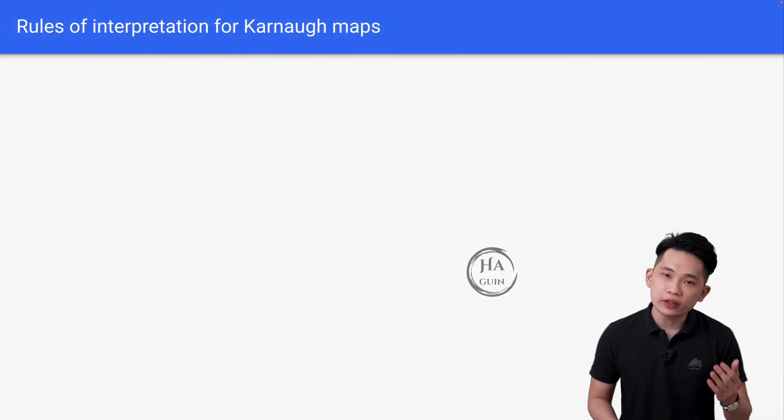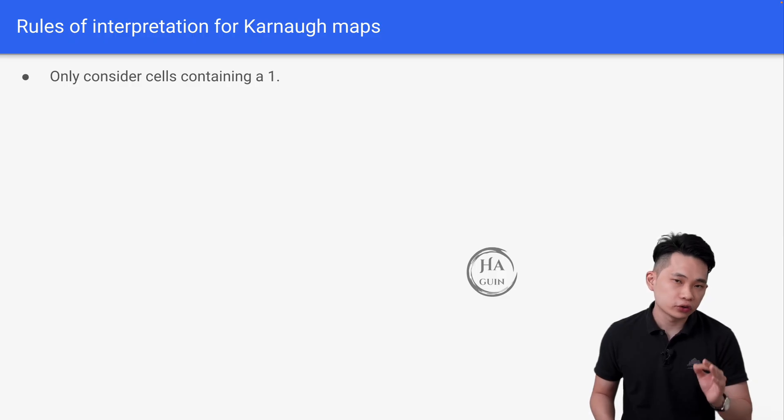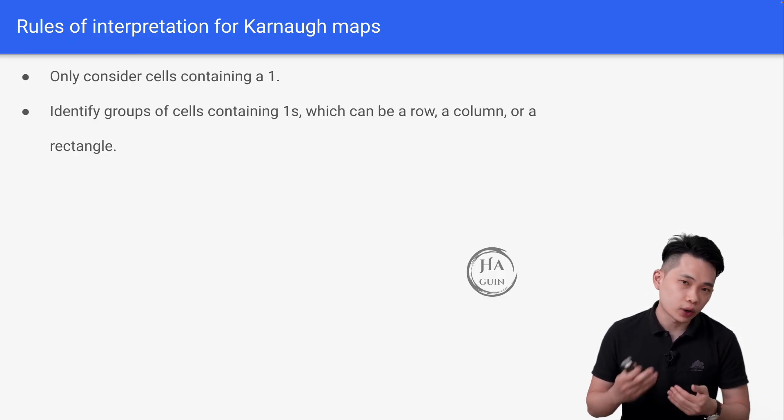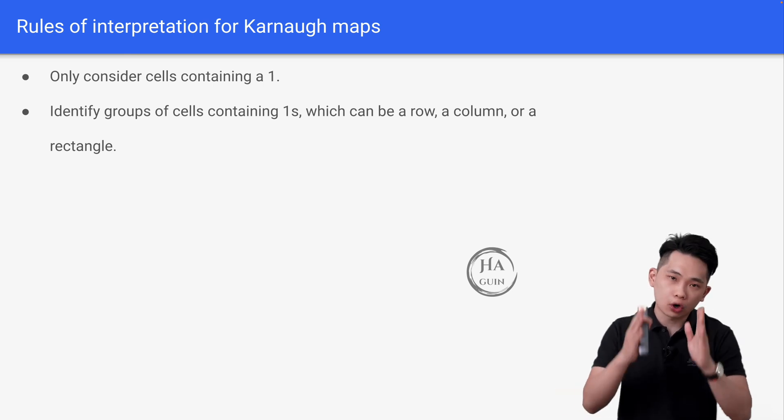Now let's talk about the rules of interpretation for Karnaugh maps. First of all, only consider cells containing a 1. And next, identify groups of cells containing 1, which can be a row, a column, or a rectangle.